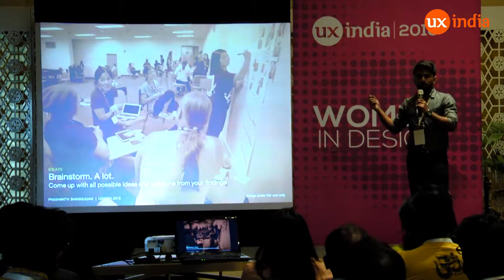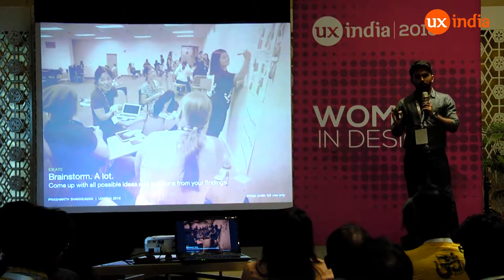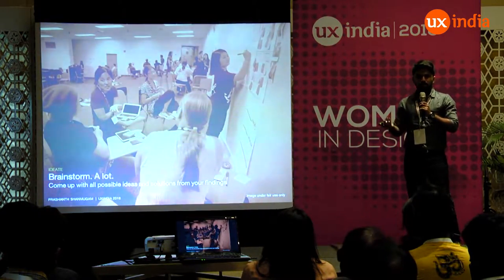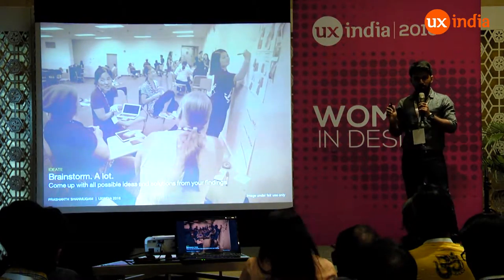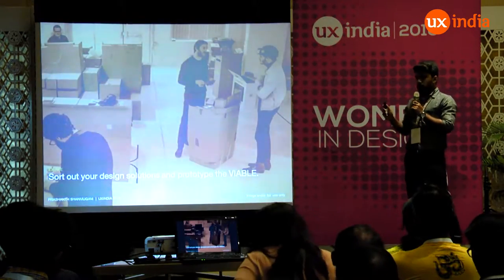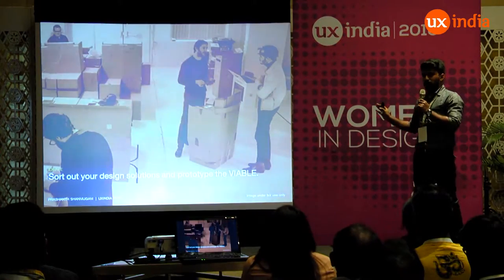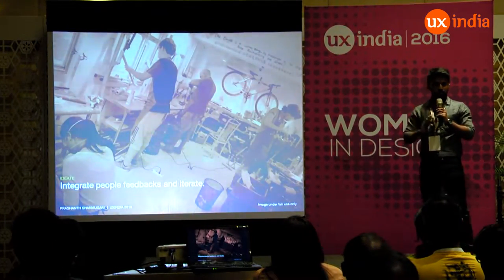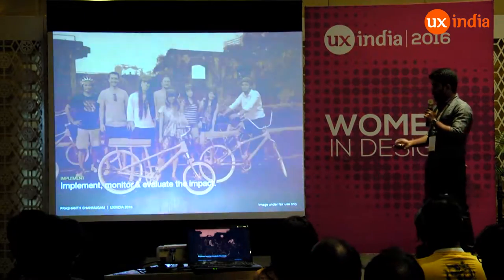The next step is brainstorming. You come up with all kinds of solutions for the problem — it could be financially not possible, economically not feasible, technically not feasible, or costly. That doesn't matter. Come up with all possible solutions. Once you have listed all solutions, pick the most viable one and prototype it to integrate people's feedback. You get great feedback and then build your solution better.